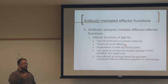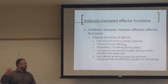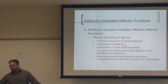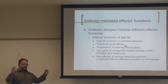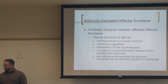IgM antibodies have lower affinity because they haven't undergone somatic hypermutation — a process occurring in germinal centers before class switching. They have better affinity than T cell receptors, but haven't been selected for high-affinity binding.